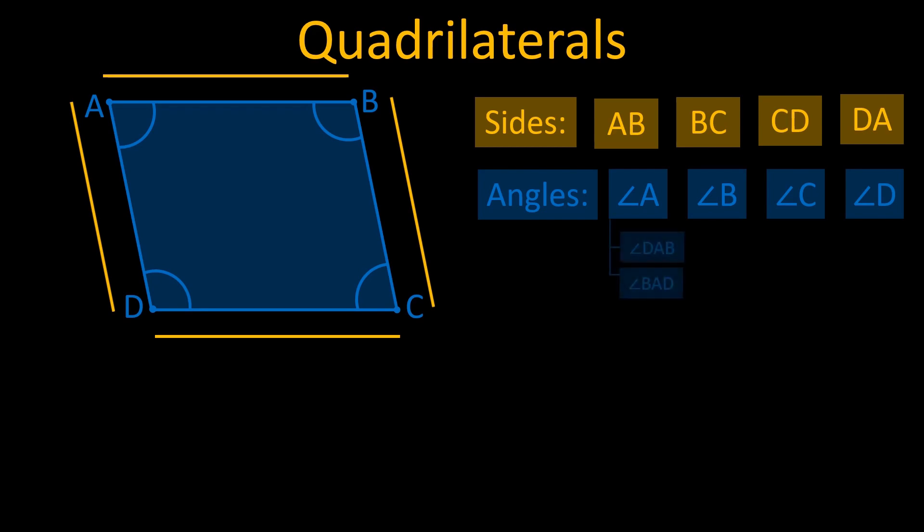So angle A can be called as angle DAB or angle BAD. Similarly, we can name the other three angles.